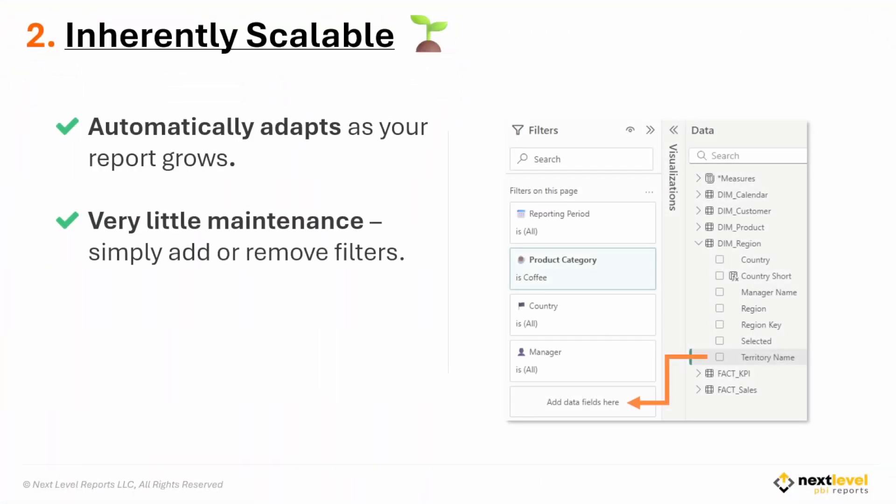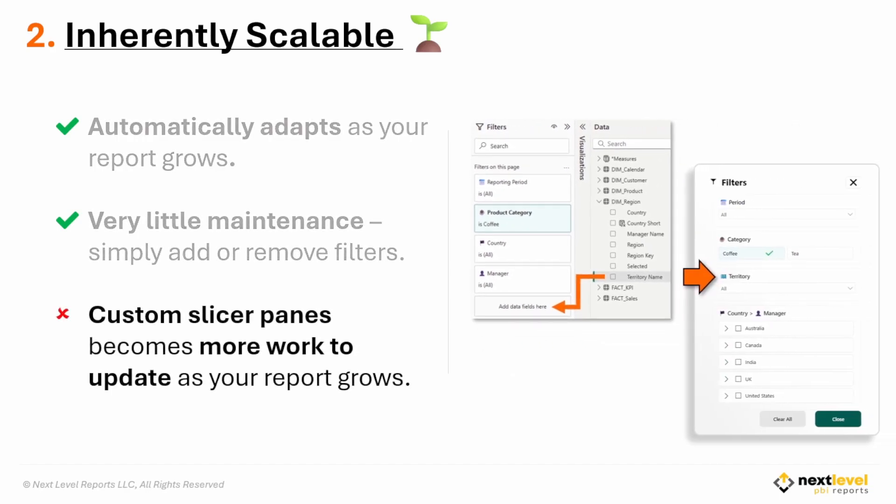Reason number two: filter panes are inherently scalable. The filter pane is a native Power BI feature, so it automatically adapts as your report grows. It requires almost no maintenance even as your model expands or your page evolves, and adding a new filter is simple. On the other hand, a custom slicer pane becomes more work to maintain when your pages, fields, and requirements grow over time.